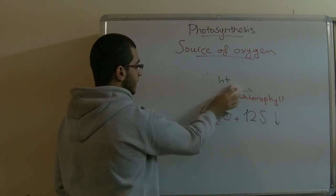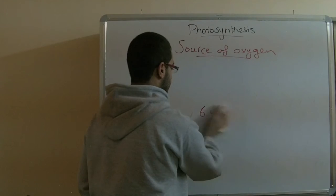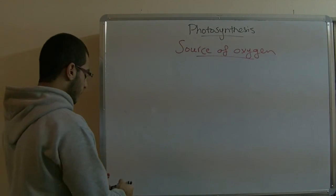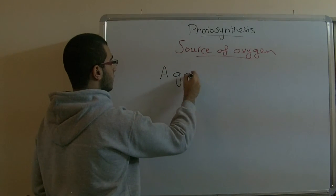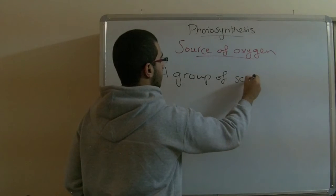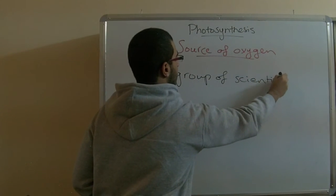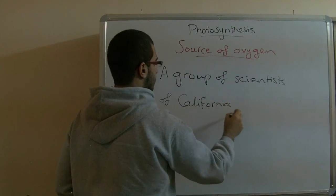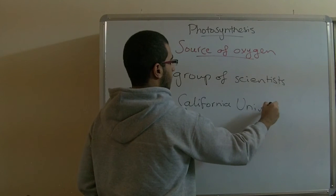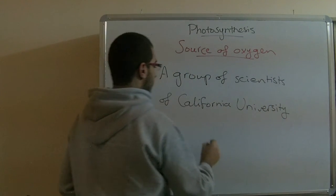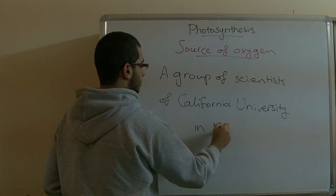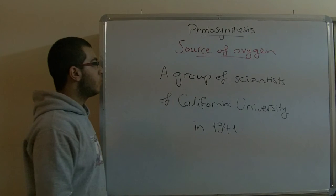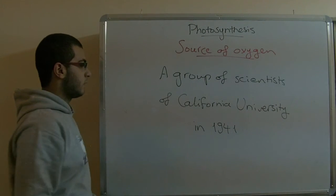This was what Van Niel did, but it was only theoretical and he did not confirm his results experimentally. A group of scientists in 1941 confirmed his results experimentally and determined what the source of oxygen is that evolves from the photosynthesis process.